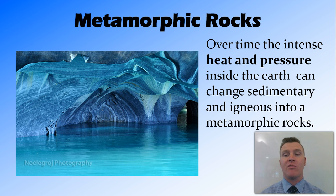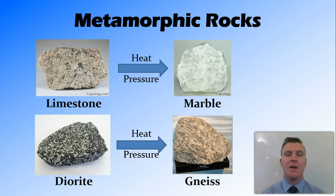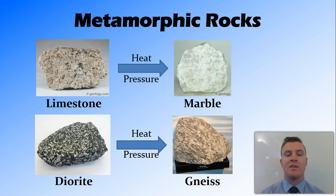It might come from an igneous rock or it might come from a sedimentary rock, but we end up with metamorphic rocks which have different properties from the rocks they're formed from. Some examples include marble, which is made when limestone undergoes immense heat and pressure over a period of time, and gneiss, which is made when diorite undergoes immense heat and pressure.